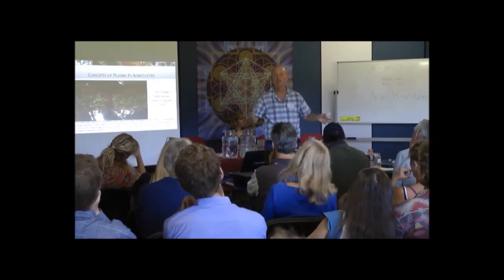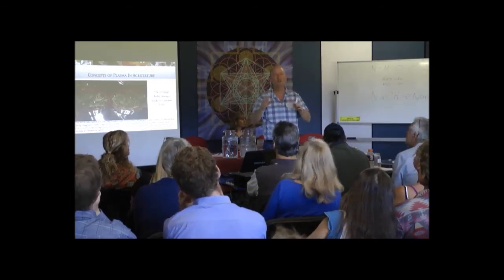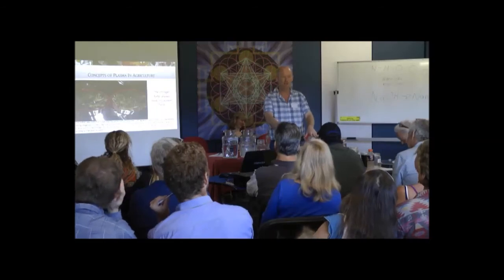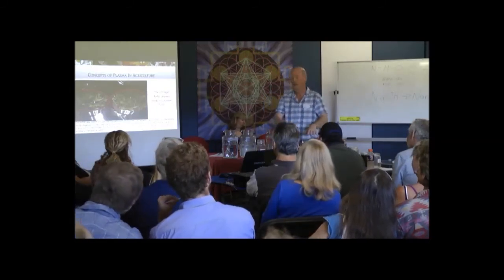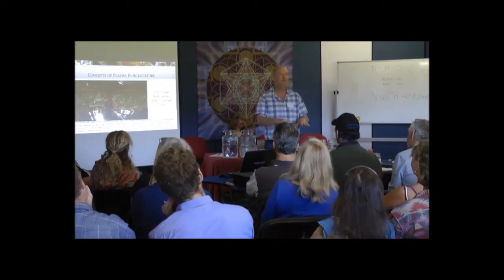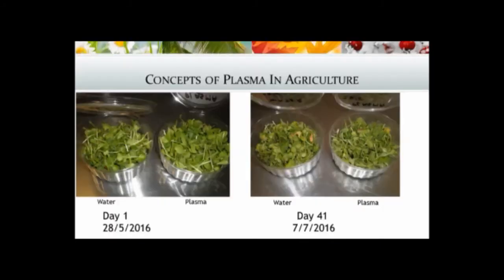Generally the radish would start rotting and smell bad by day 11. But I made some mistakes: I put the normal water and plasma water punnets together, then placed them on the same table, and stored them next to each other in the fridge. So I was getting interaction between them. I labeled them well, but it didn't matter — by day 41 they were still looking good, just a little yellowy.